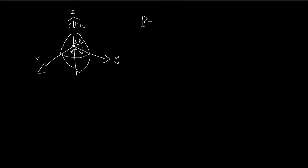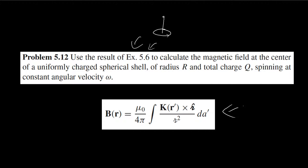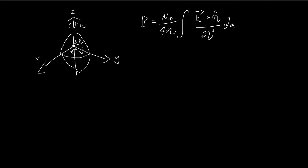Let's copy out the formula to see what exactly we need. We have the current density K times eta. I don't like using the script-r symbol, so I use eta instead. Eta is the vector pointing from some point on the surface of the sphere all the way to the center. Let's figure out what these components should be.